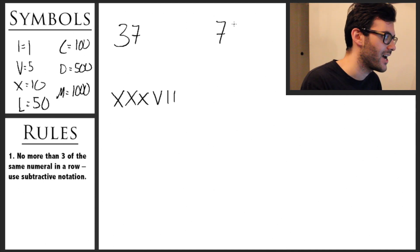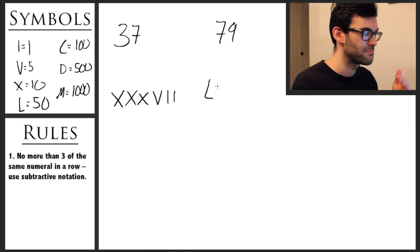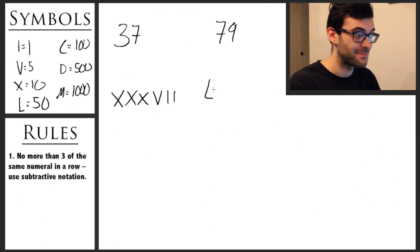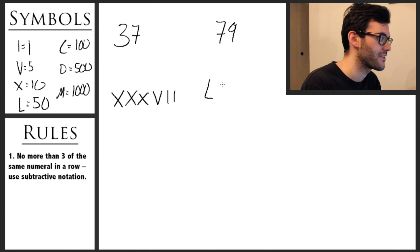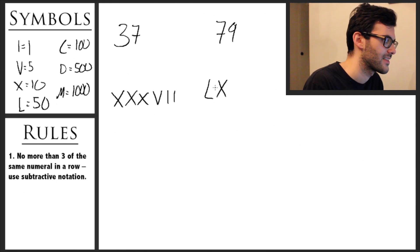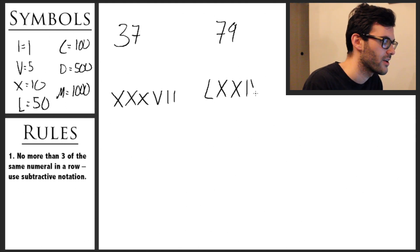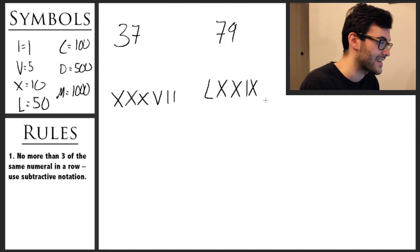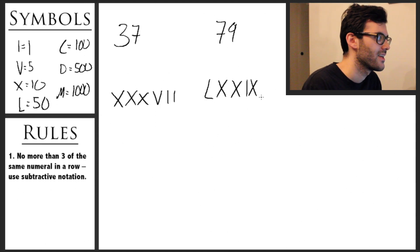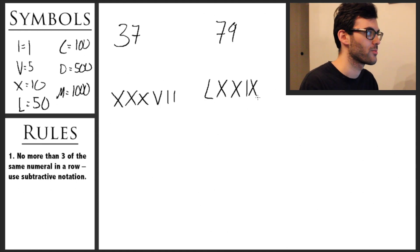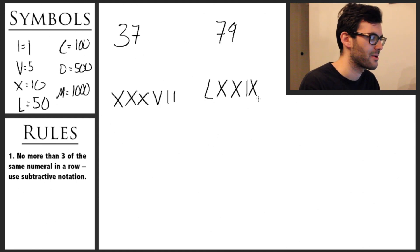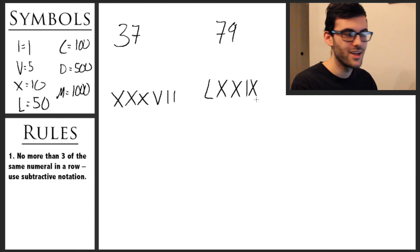Another example: the number 79. We're going to start with L for 50, because if we did seven X's that'd be more than three. So L for 50, then XX — that's 60, 70. And then 9, as we talked about before, is IX, one before 10. So 79 is LXXIX. Let's go to one more example before talking about the last important rule of writing Roman numerals.